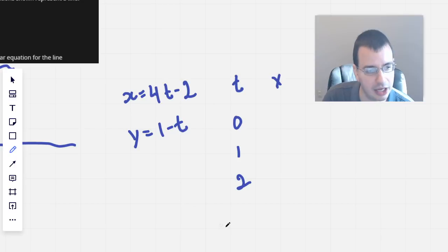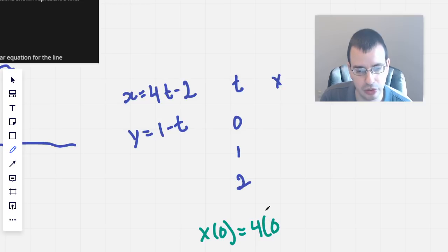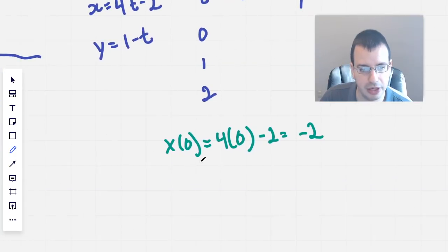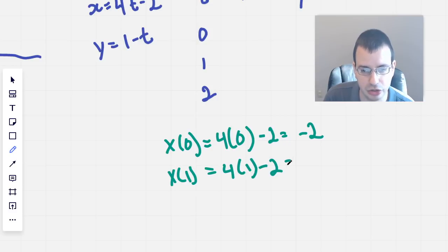So x of 0, plug in here. 4 times 0 minus 2 would be negative 2. x of 1 equals 4 times 1 minus 2, which is 4 minus 2, which is positive 2.